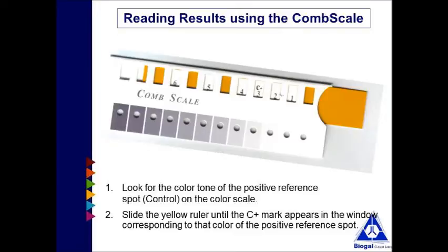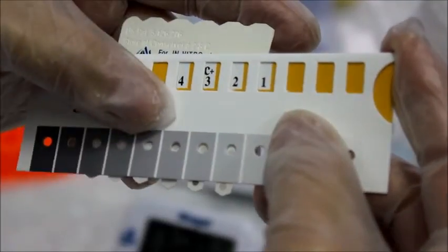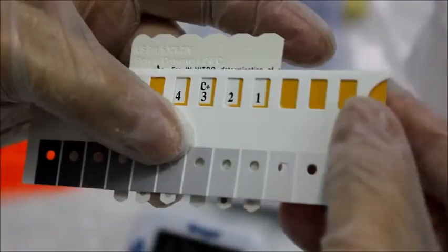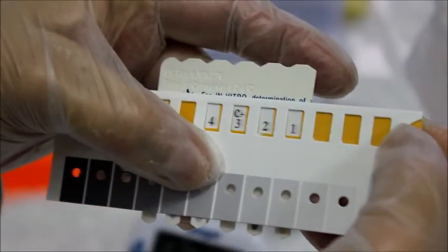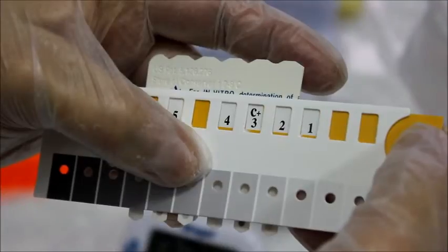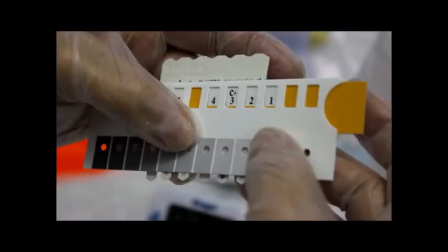Find the tone of purple gray on the comb scale that most closely matches the control spot on the upper spot of the comb, known as the positive reference spot. Slide the yellow ruler until the C+ mark appears in the window above the color you just found. Hold the ruler slide in this position during the entire reading and don't move it anymore.